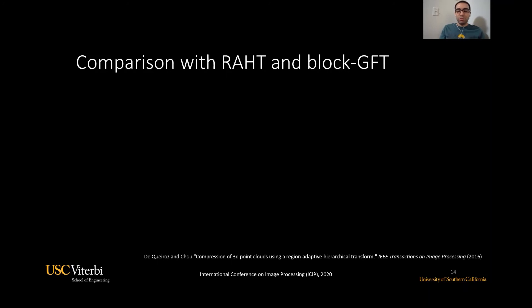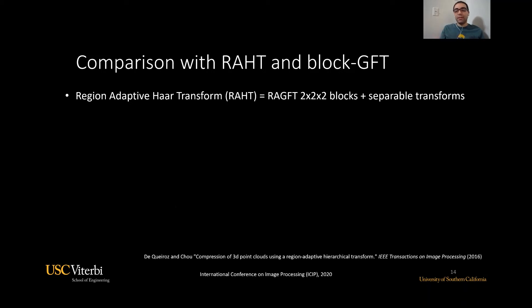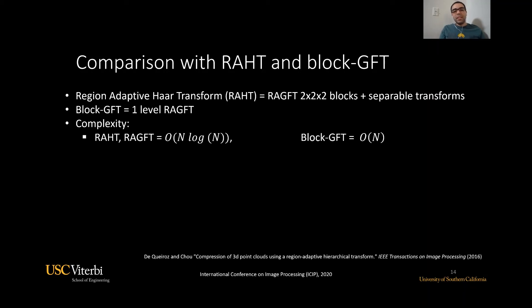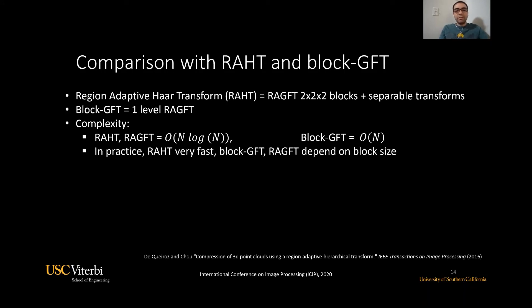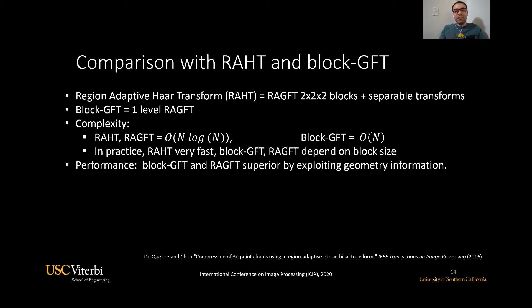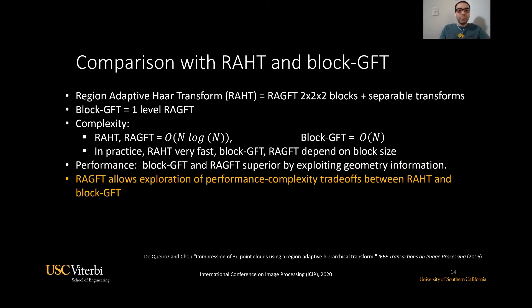The RAGFT is closely related to two well-known transforms, the RAT and the block GFT. The regional adaptive Haar transform (RAT) can be seen as a special case of the RAGFT where all blocks have size 2 and all transforms are separable. As shown earlier, the block GFT corresponds to the one-level RAGFT. In terms of complexity, RAGFT and RAT have the same complexity, while the block GFT has linear complexity. In practice, however, the RAT is much faster since the block GFT and the RAGFT depend on block size. In terms of coding performance, the block GFT and the RAGFT are usually better because they exploit geometry information. The RAGFT, since it is a hybrid of both, allows us to explore other performance-complexity trade-offs.